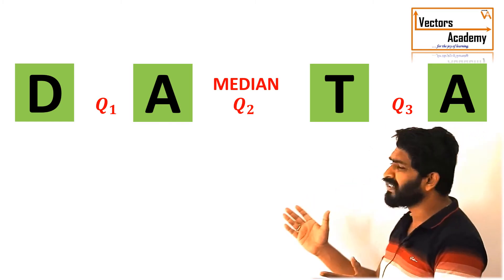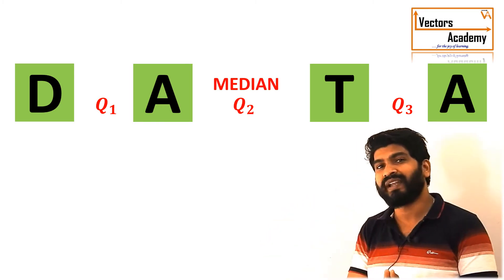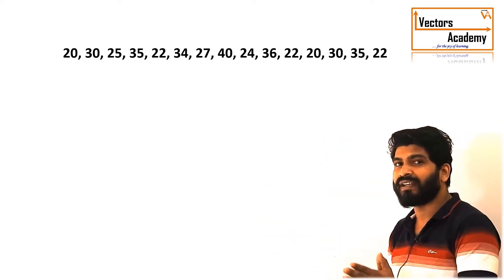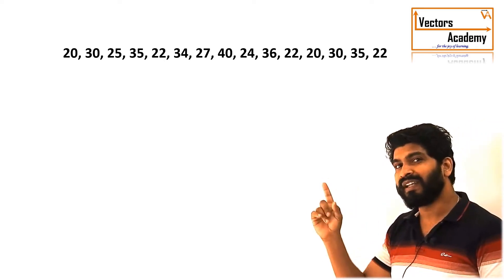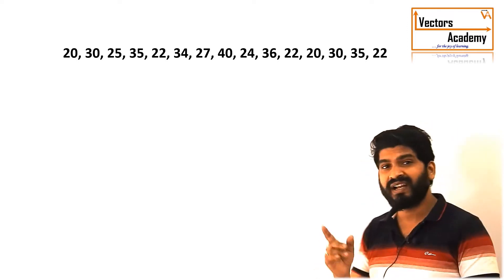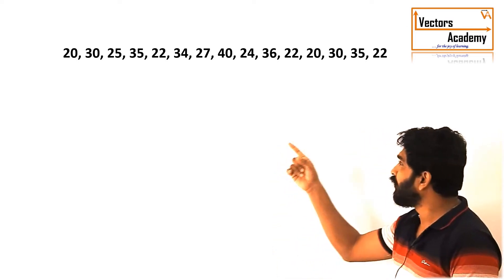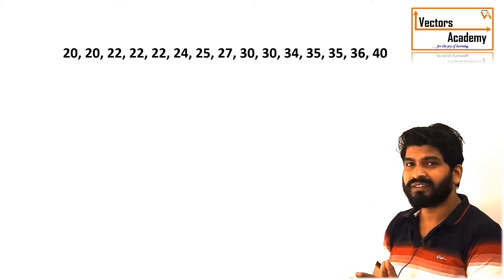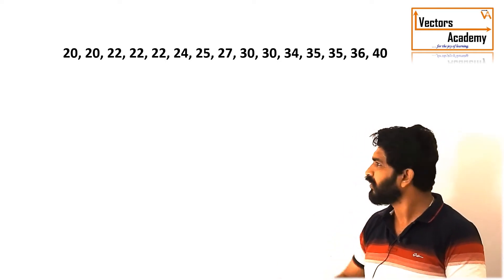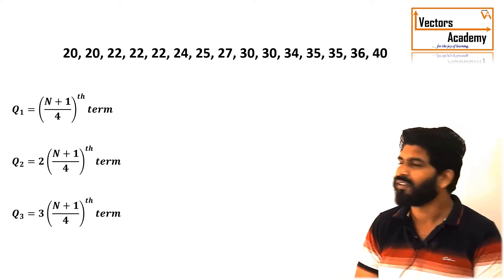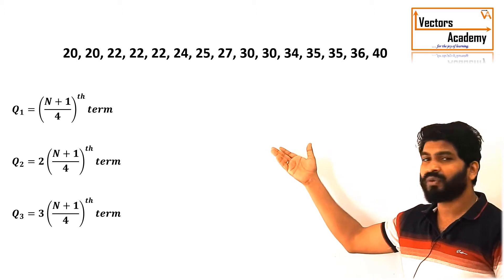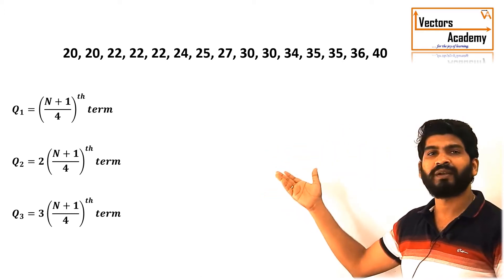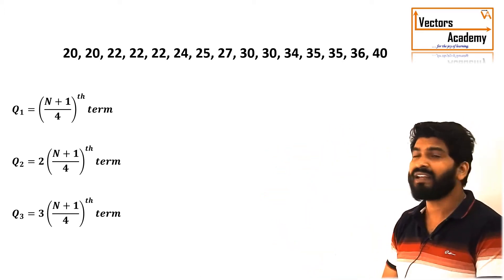Now we will have a simple example to understand how to calculate the quartiles for discrete data. Suppose we have a set of values and we need to find the quartiles. First, just as when finding the median, we write the data in ascending order. The quartiles can be calculated using these formulas: Q1 = (n+1)/4, Q2 = 2(n+1)/4, and Q3 = 3(n+1)/4, where n is the number of observations.